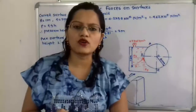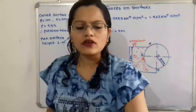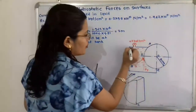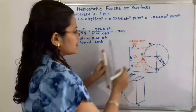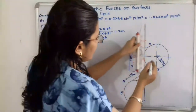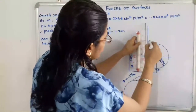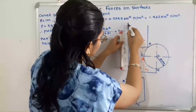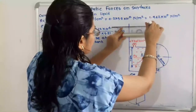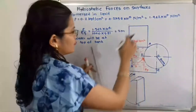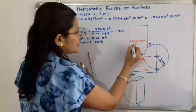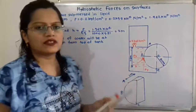This means the free surface of water is at a height of 2 meters above the top of the tank. In the diagram, the top of the tank is the starting point, and above it we show the 2 meter distance to the free surface of water. So below the free surface: 2 meters to point A, and then 1.5 meters down to point C.